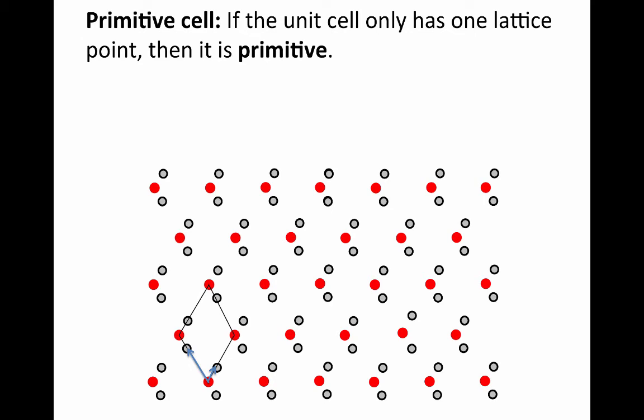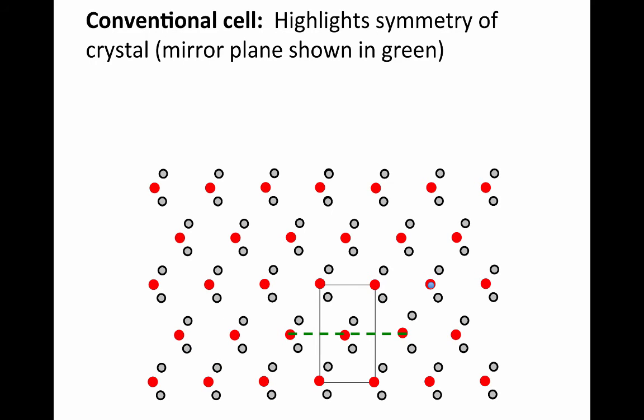This cell is really appealing in that it's simple, it doesn't have any centering operations, it's really clean like that. But by convention, what we really like are cells that highlight the symmetry of the system. The basic argument comes down to the rectangular cell highlights the mirror planes in this system better than the diamond lattice does.